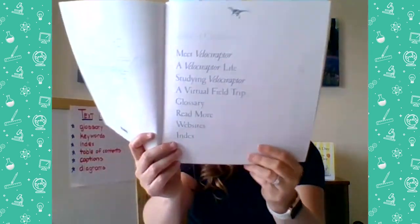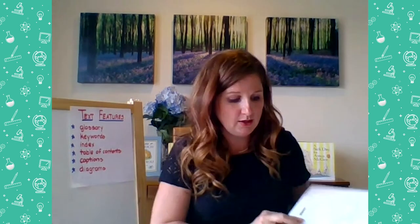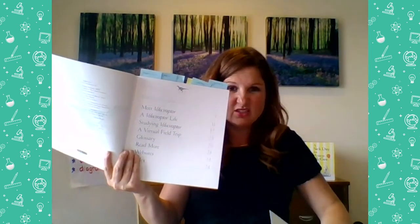The next text feature on our list is table of contents. I know you know what a table of contents is — you're first graders. There's our table of contents right there. How does the table of contents help us as readers? It kind of tells us what the book is about. It gets our minds ready to read because we can think, oh, this is the stuff this book is going to talk about. So it's a good thing to read to get our brains ready for learning that information.